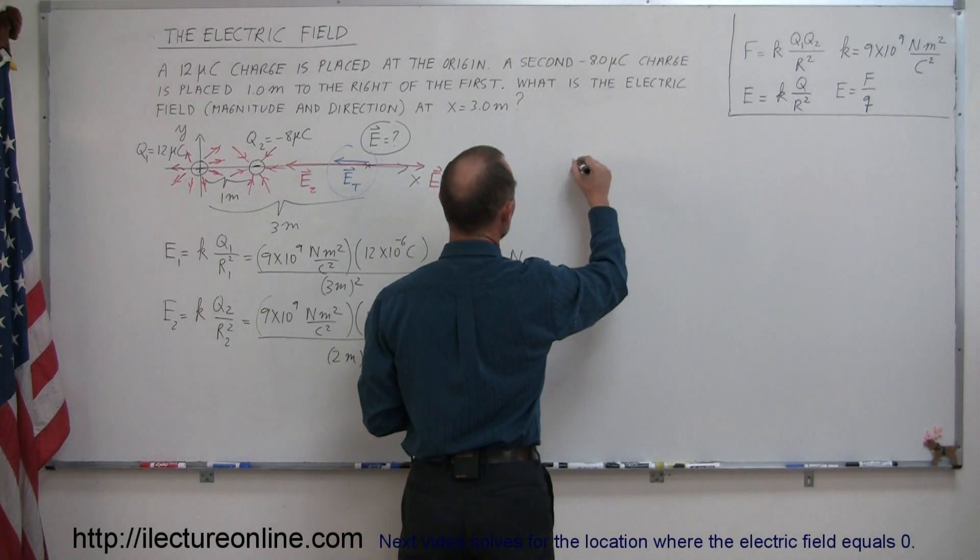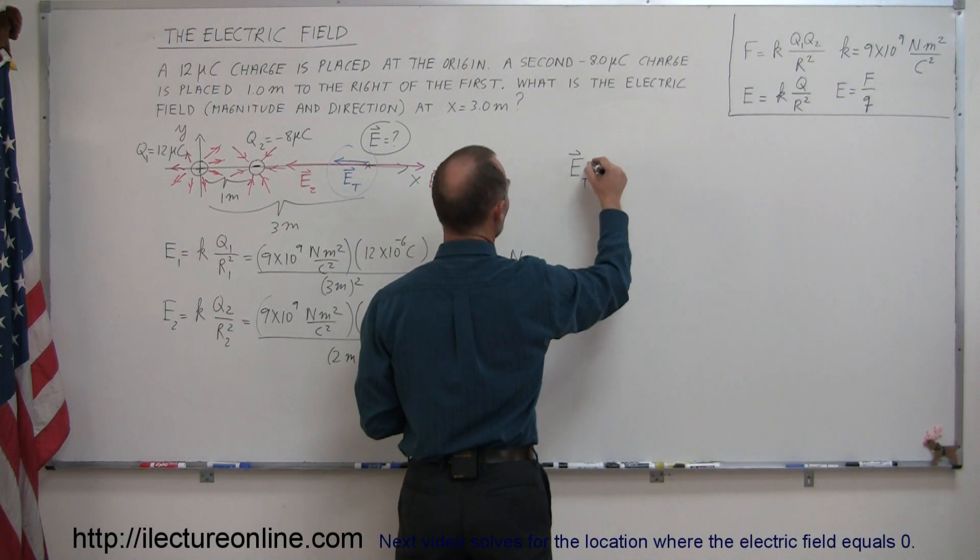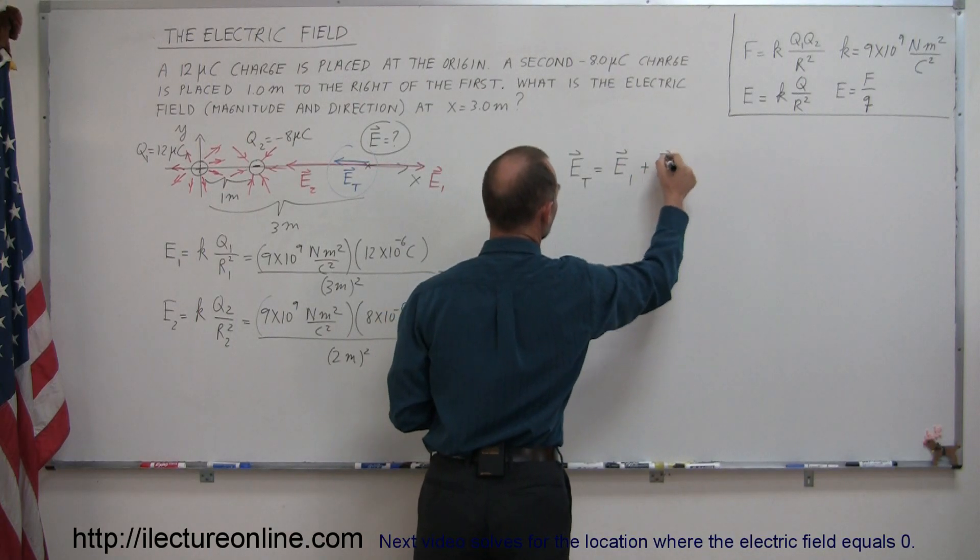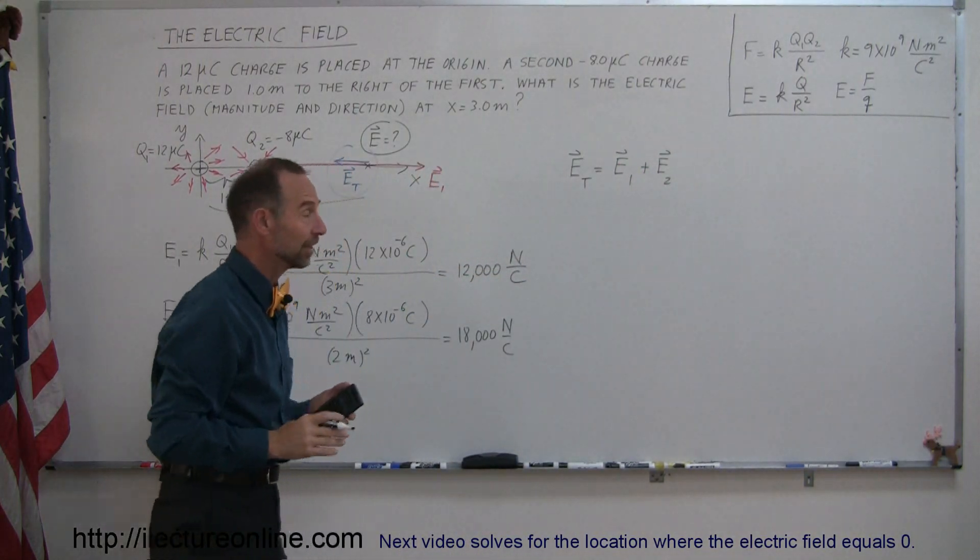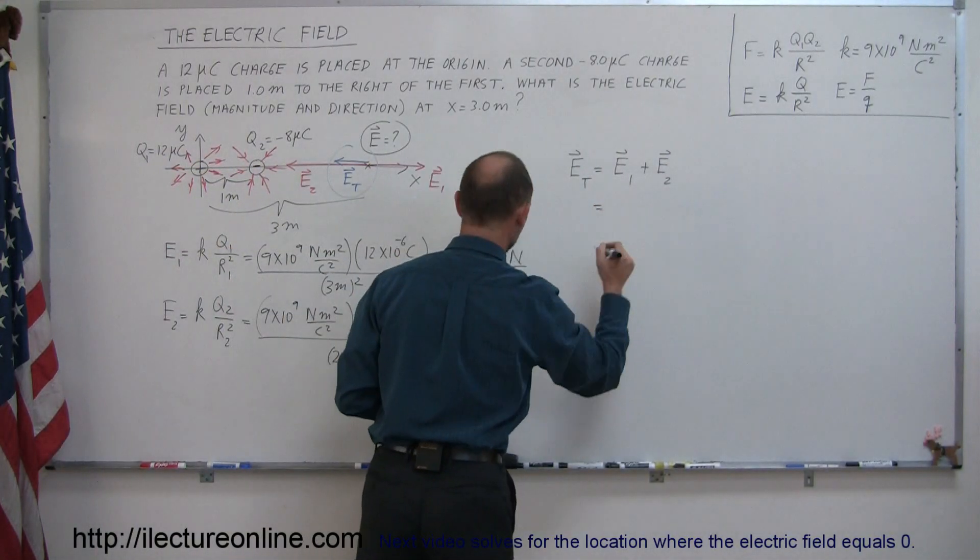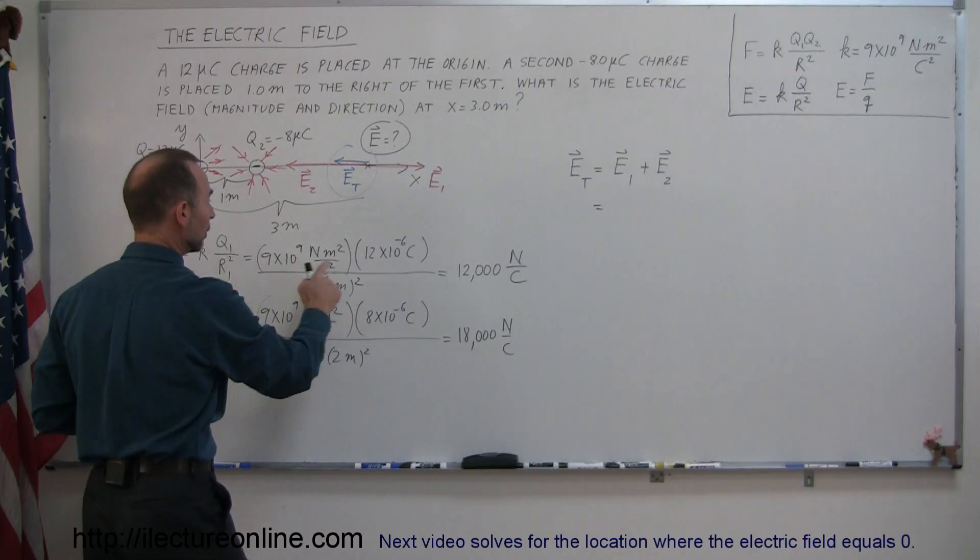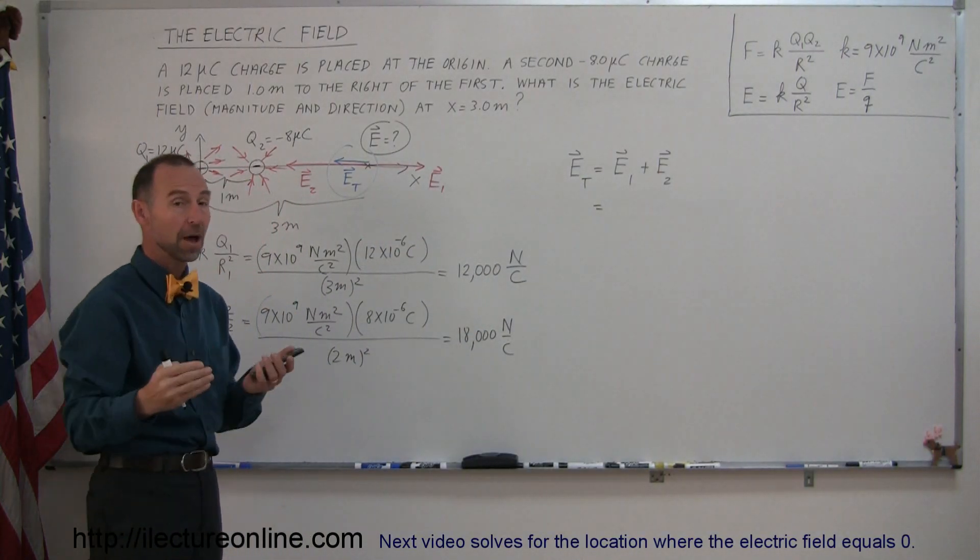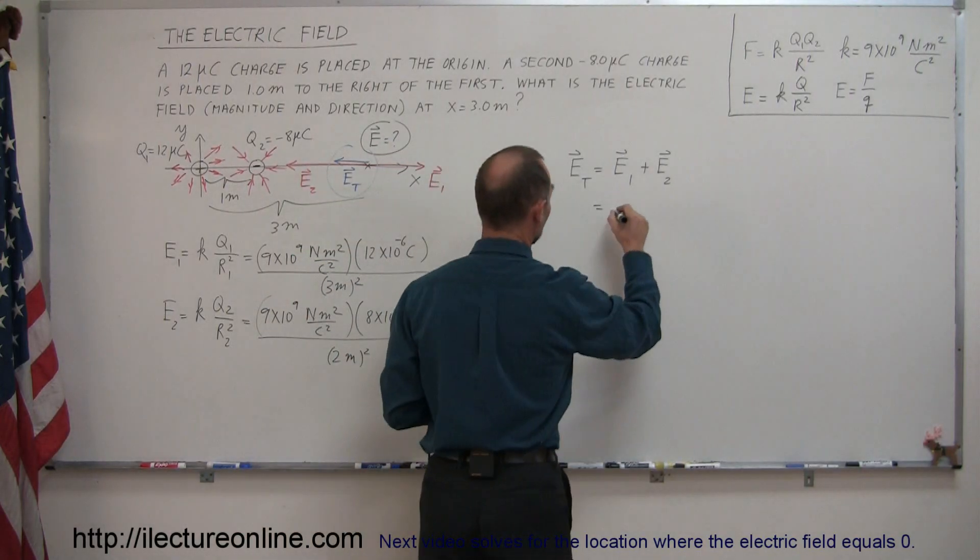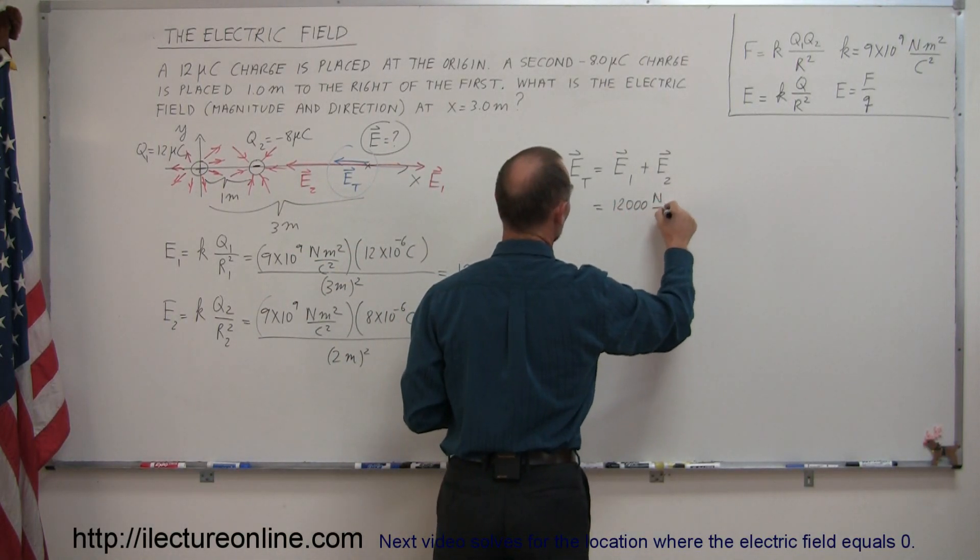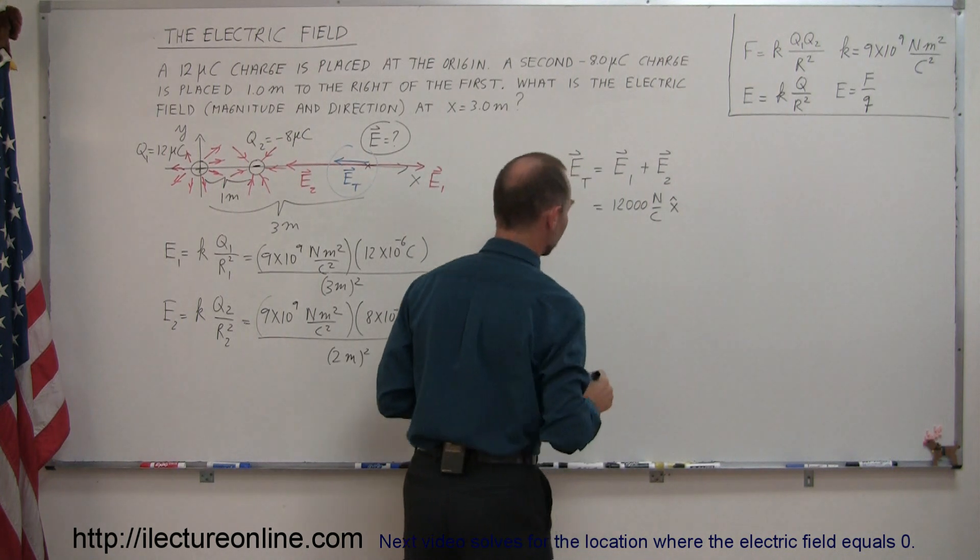So we can say E total is equal to the sum of E1 and E2, because everything is in the x direction. Now E1, the magnitude is 12,000 newtons per coulomb, and it's directed to the right, so that's a positive electric field. So it's a positive 12,000 newtons per coulomb in the positive x direction.